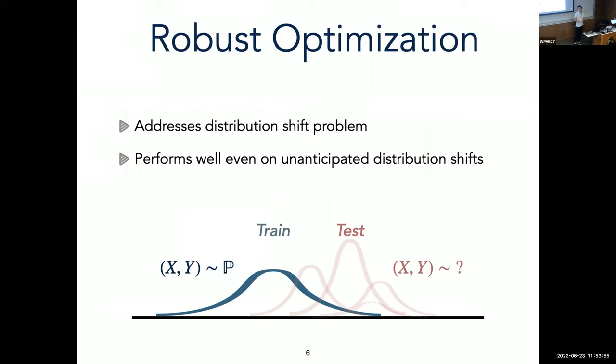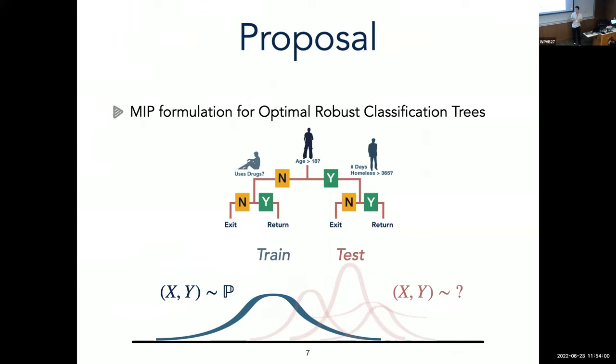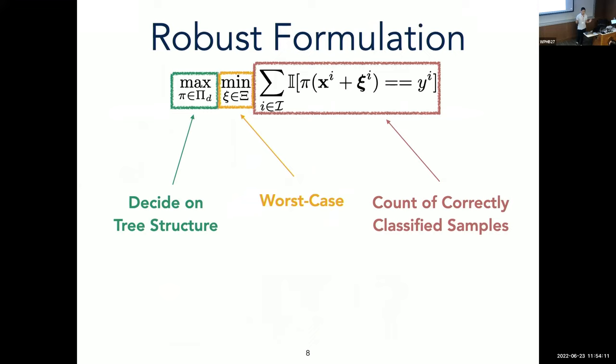So with all these in mind, we developed an MIP-based formulation for optimal robust classification trees. So this is more mathematically. This is our formulation. So you want to choose some classification tree π with some maximum depth D that maximizes the training accuracy, which I use as a number of classified training samples in the worst case distribution shift, which we'll model here as a perturbation of our data.